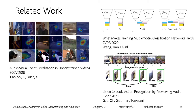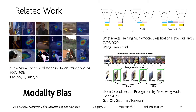The issue has been observed in many recent works — for example, from YAPEN ECCV 2018 on audio-visual event localization, which tries to localize where sound is coming from. The recent CVPR paper on what makes multimodal classification networks hard shows that simple concatenation usually won't give the best results. The Listen to Look work tries to distill information from visual modality to audio modality. All of these projects share a similar challenge: modality bias.